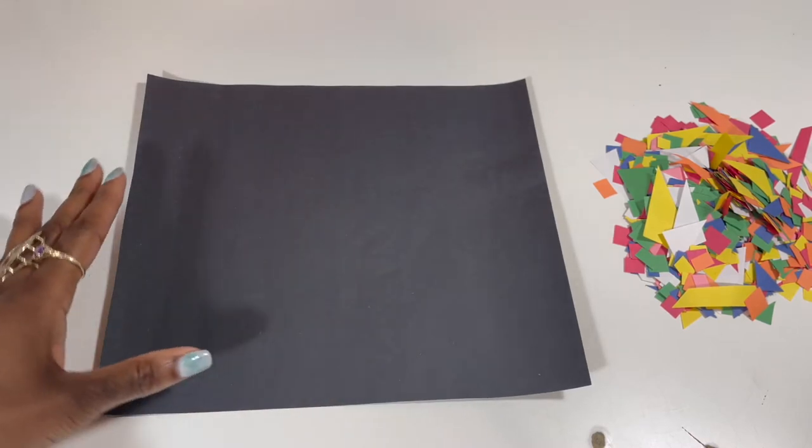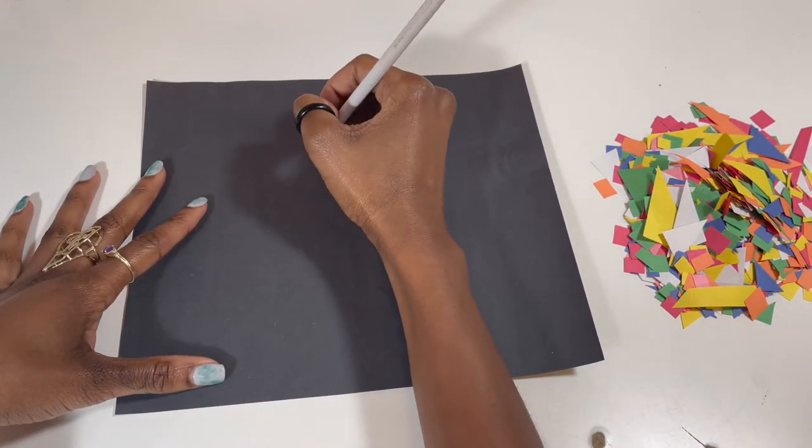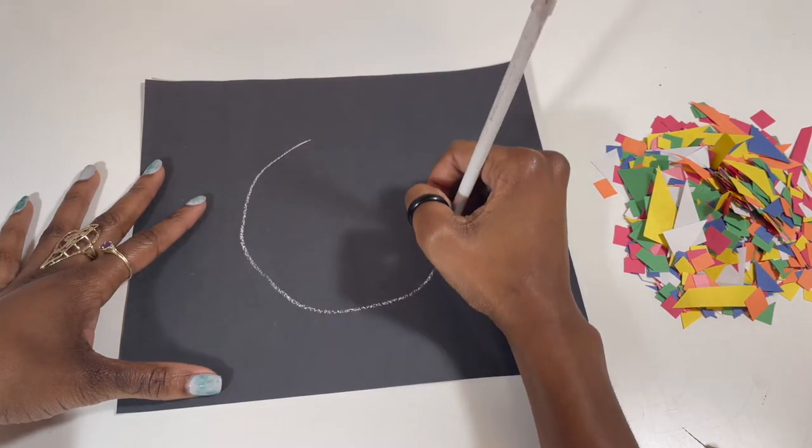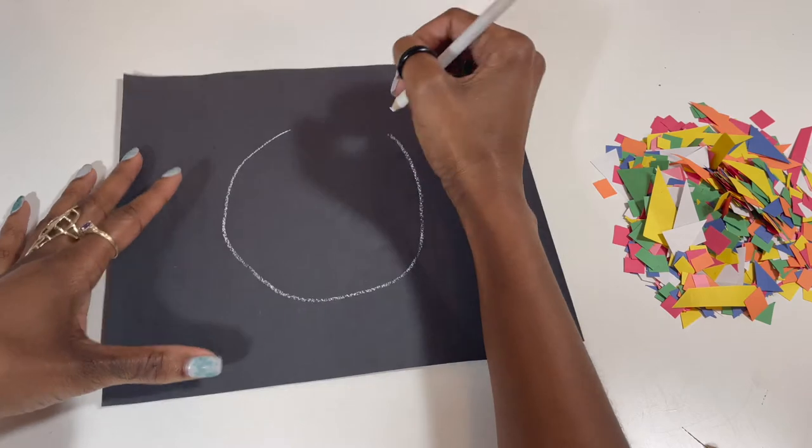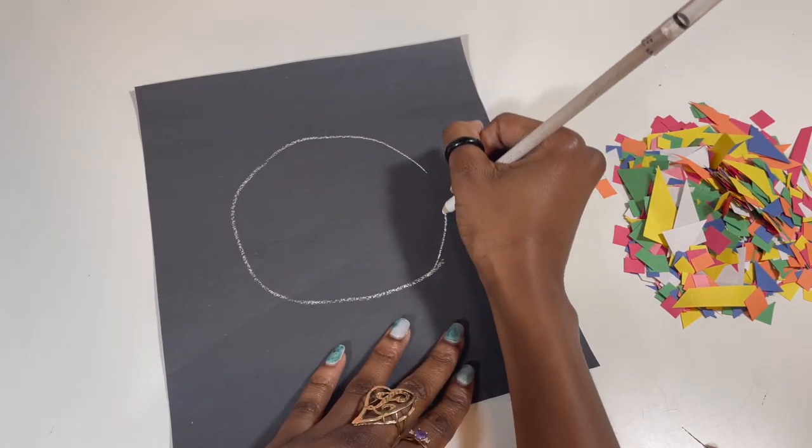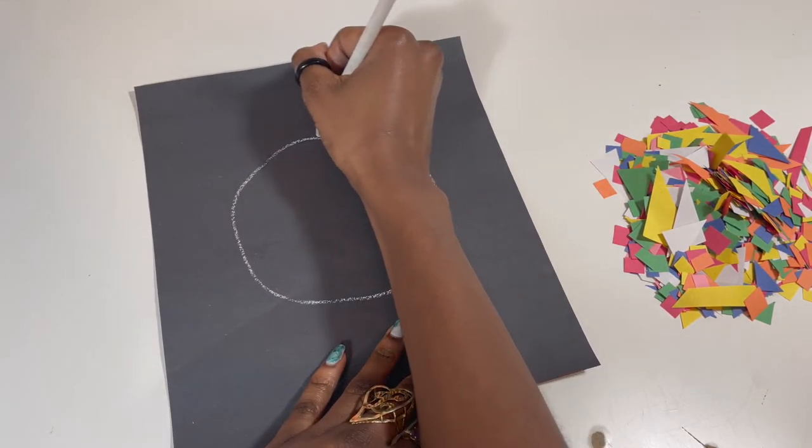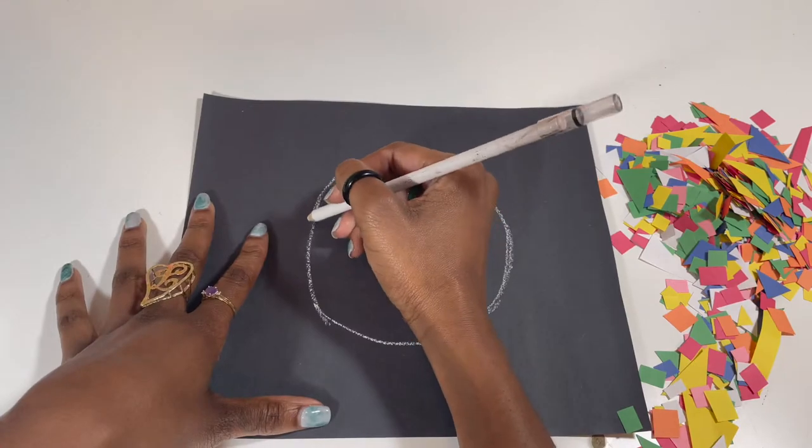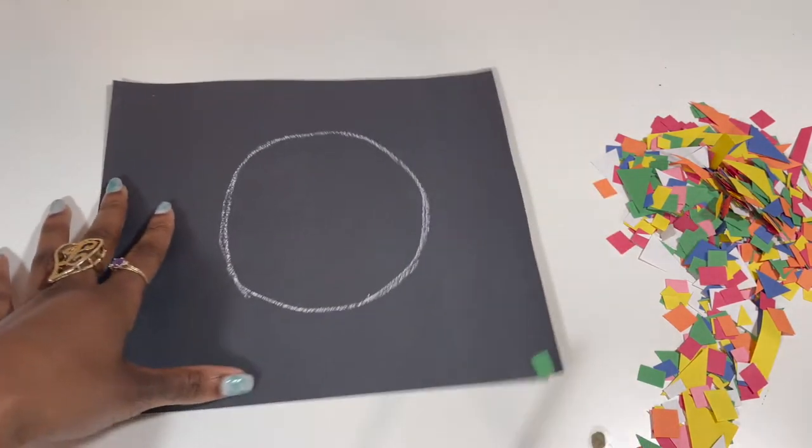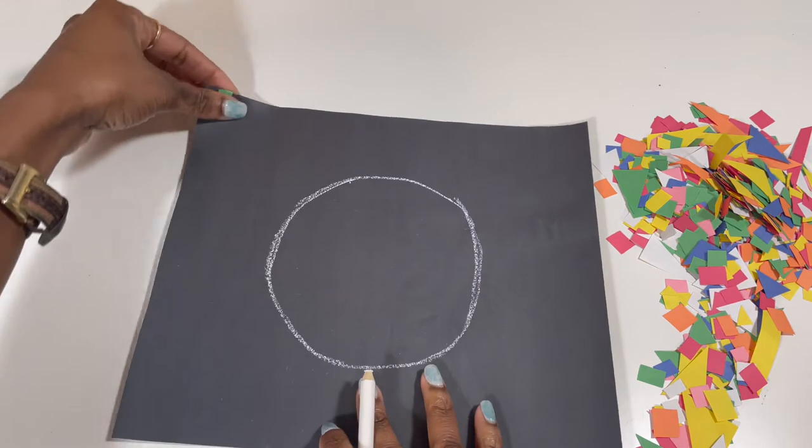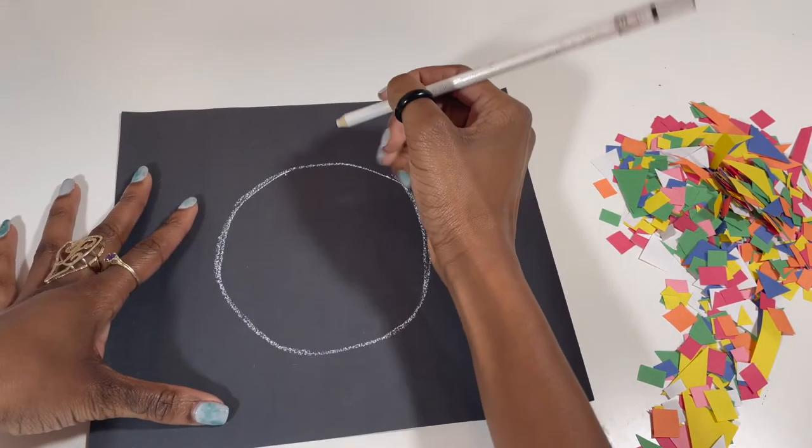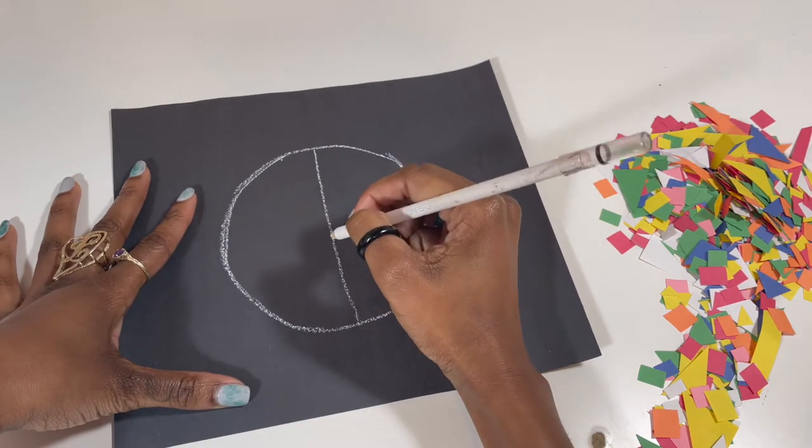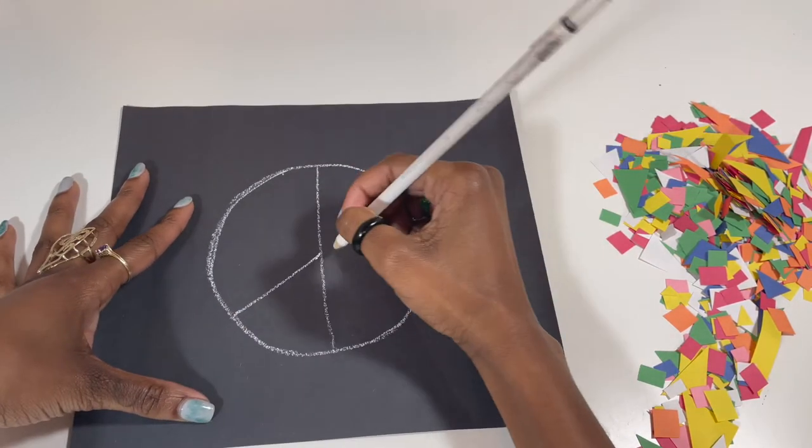So I'm going to go ahead and I want to do the peace symbol. So I'm going to make a circle. Don't laugh at my circle. It's a little bit wonky. That's okay because none of my shapes that I'm going to be using here are perfectly cut. And then I'm going to go down the center. That line. This line.